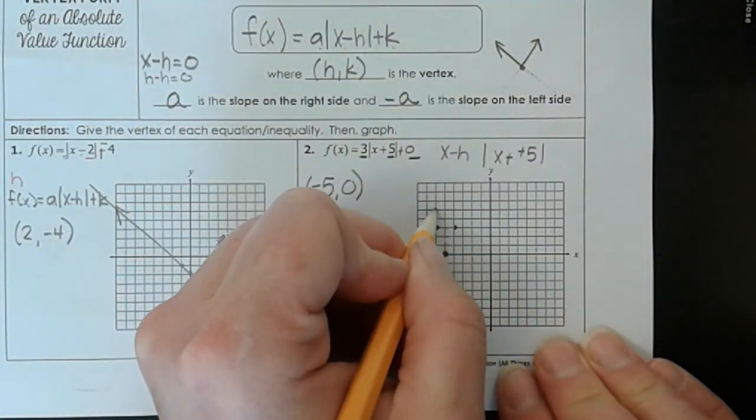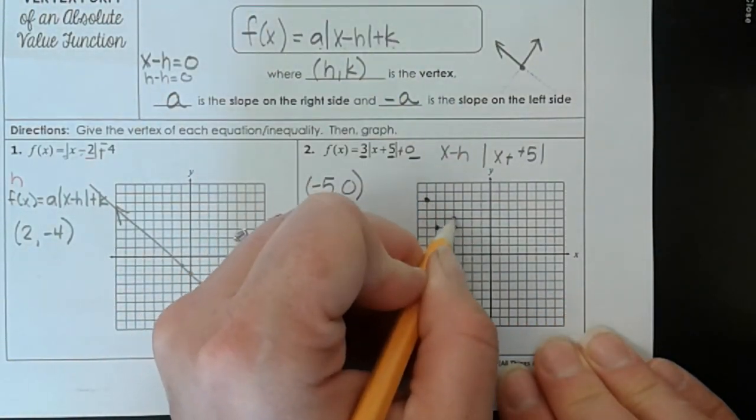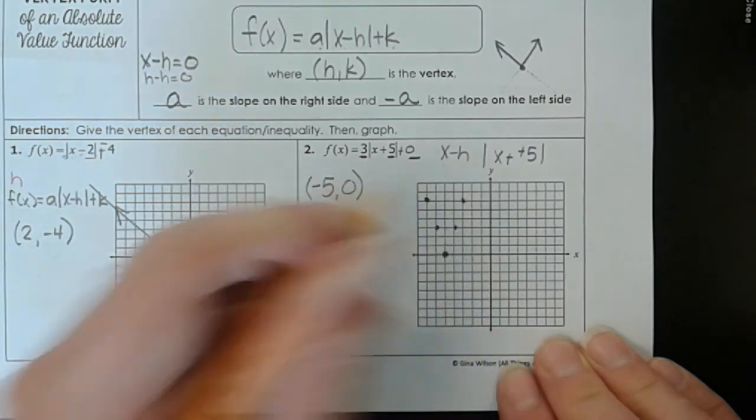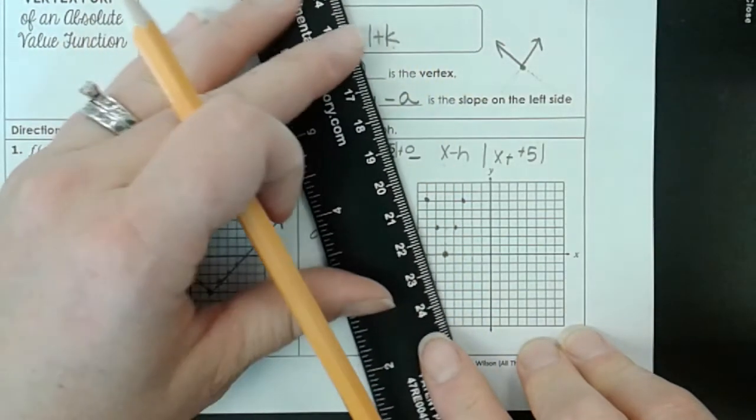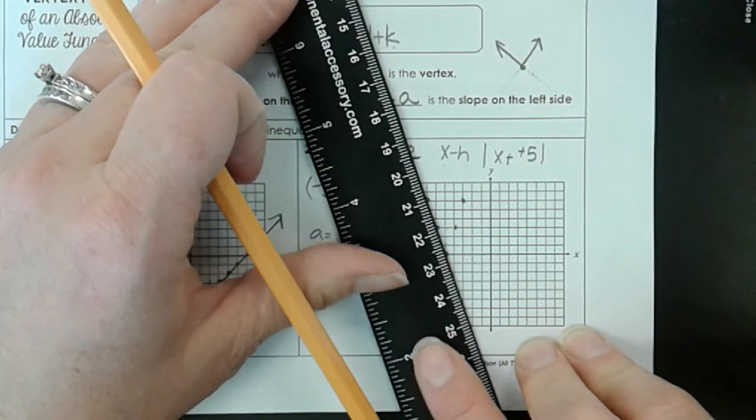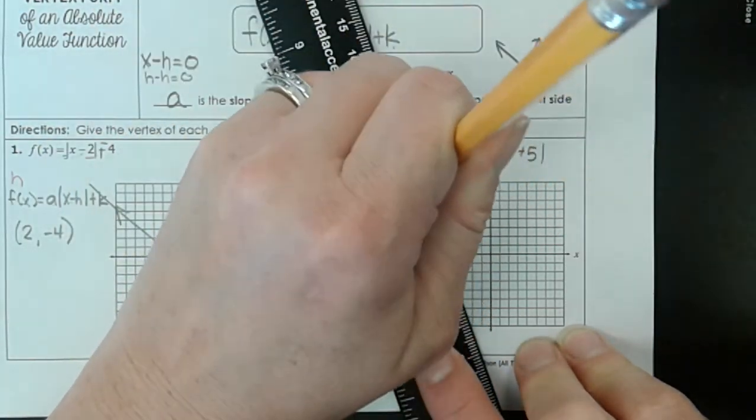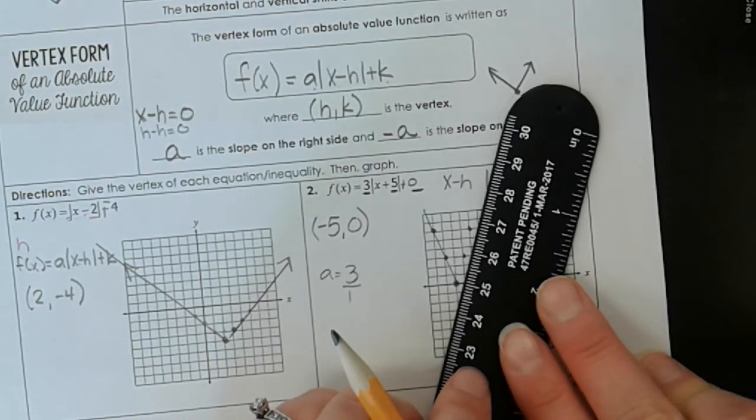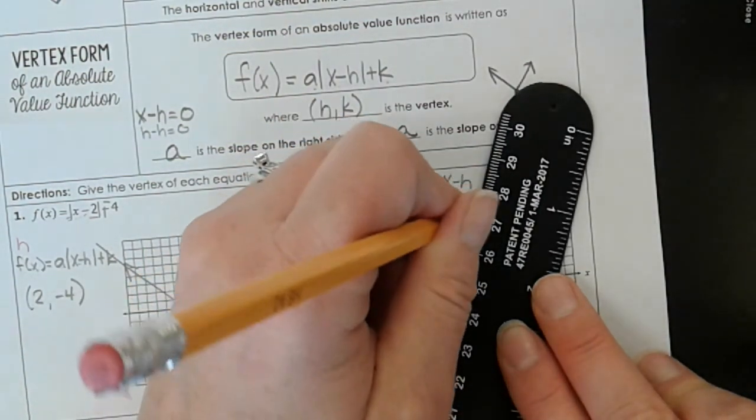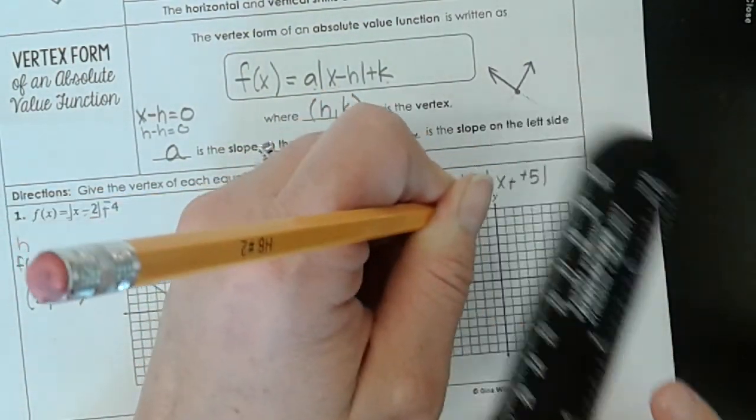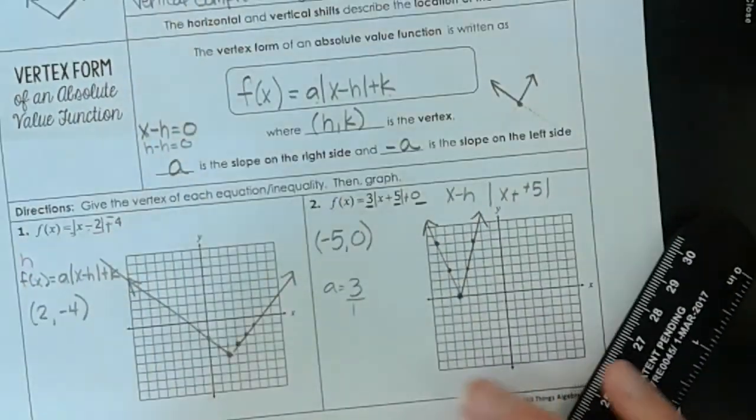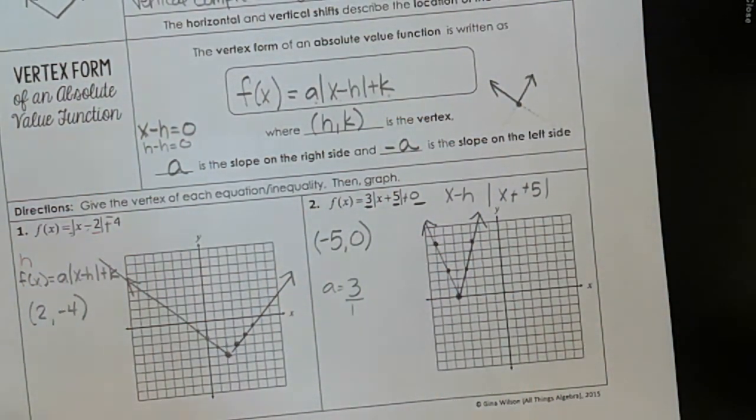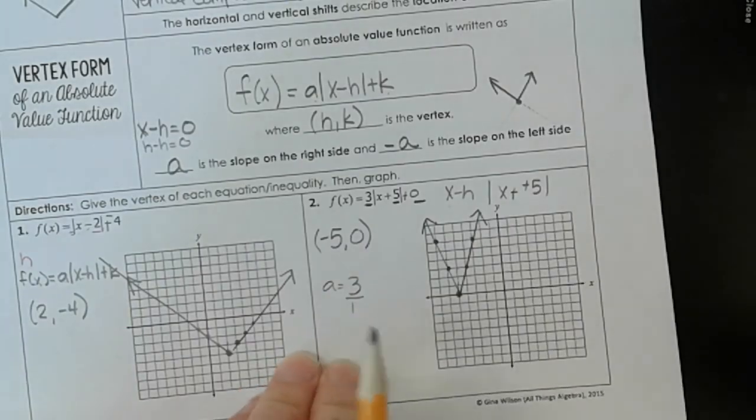We'll plot one more point. 1, 2, 3. 1, 2, 3. Yeah, we're supposed to have three points for a line. So we'll do three points on each side. So you have that side. And there you go. That is your absolute value function.